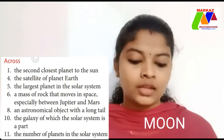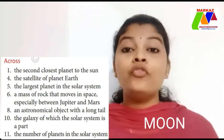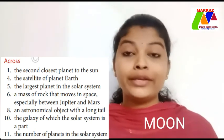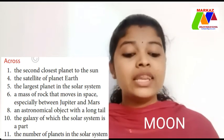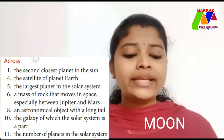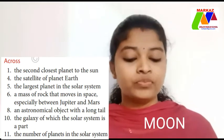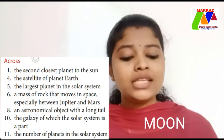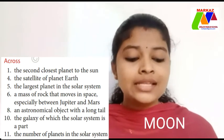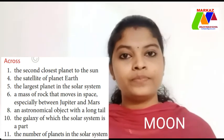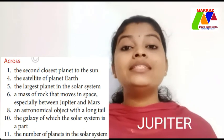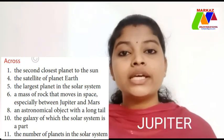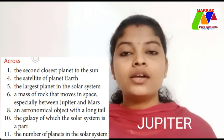Next, across five: the largest planet in the solar system. The answer is Jupiter.